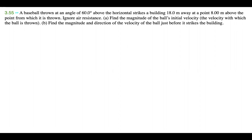Ignore air resistance. Part A: find the magnitude of the ball's initial velocity — the velocity with which the ball is thrown. Part B: find the magnitude and direction of the velocity of the ball just before it strikes the building.